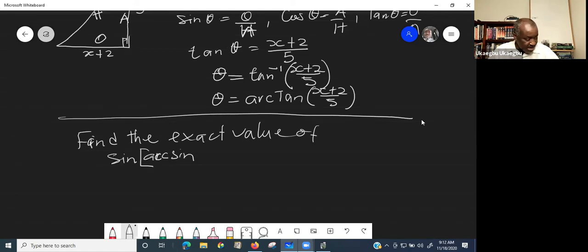Find the exact value of, let's say, sine, arc sine, arc sine, negative 0.2. So this one, you need a calculator. So now, let's get back to the calculator.